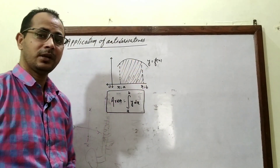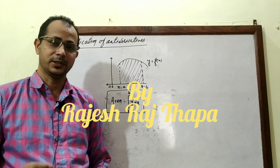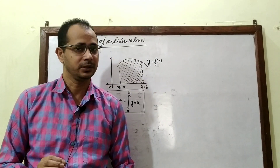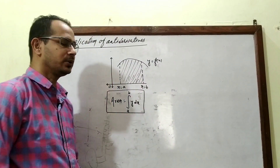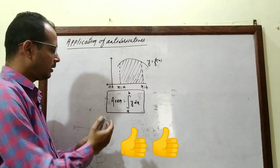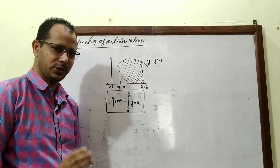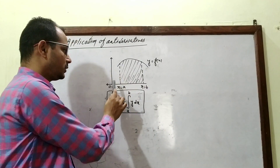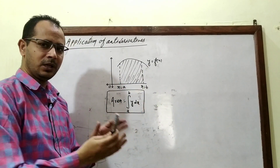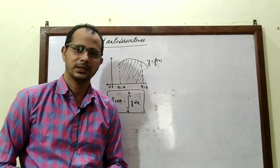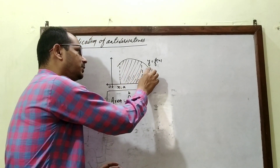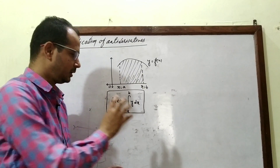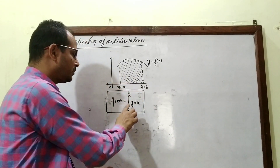Hello everyone, welcome to this video. In this video, we discuss application of anti-derivatives. This is a very important topic for board examinations. First, we will discuss how to solve the first type of questions. If y = f(x) is a curve, and that curve encloses a portion with x = a, x = b, and the x-axis, to find the area we integrate y = f(x) from a to b as a definite integral.